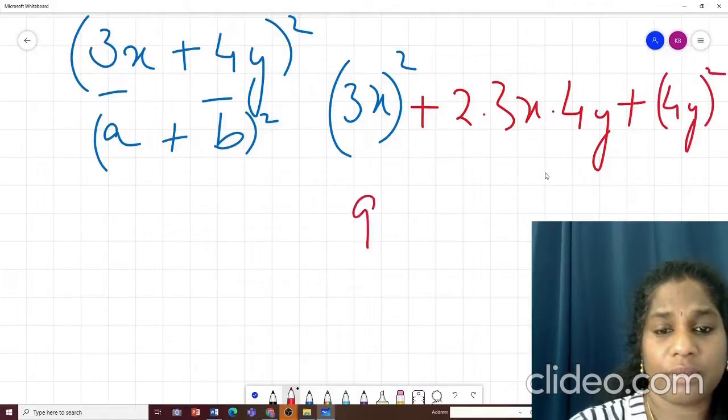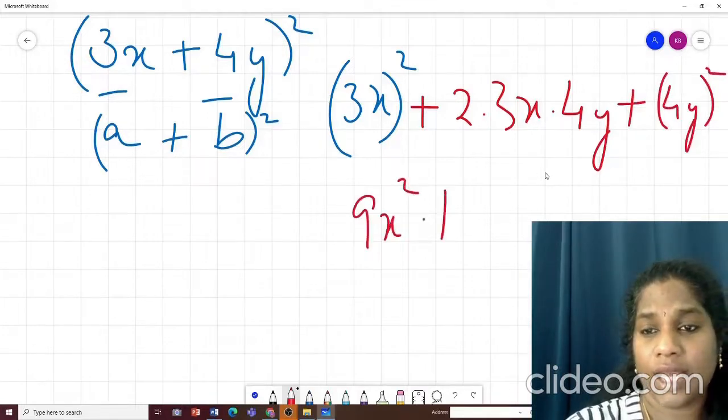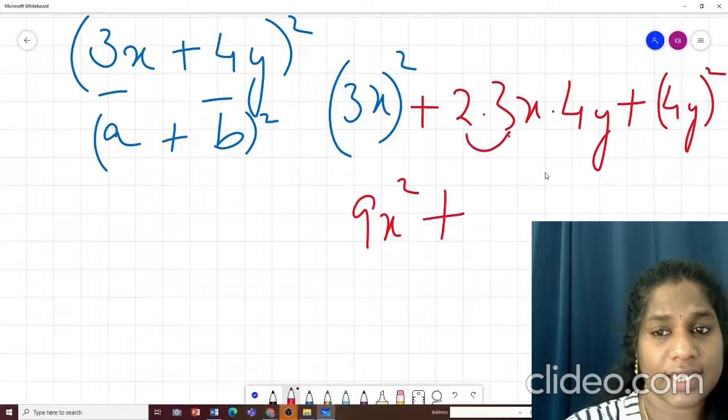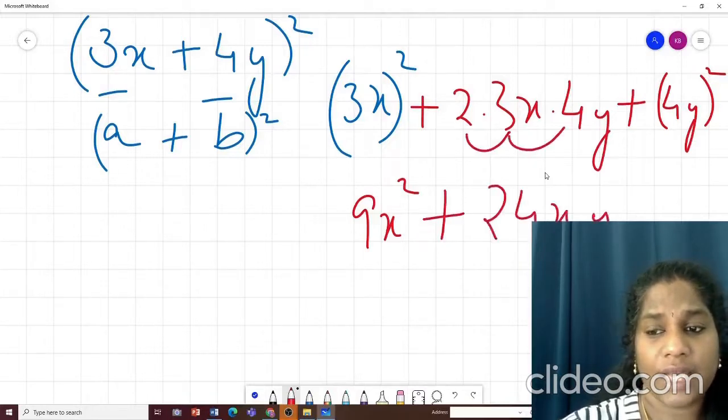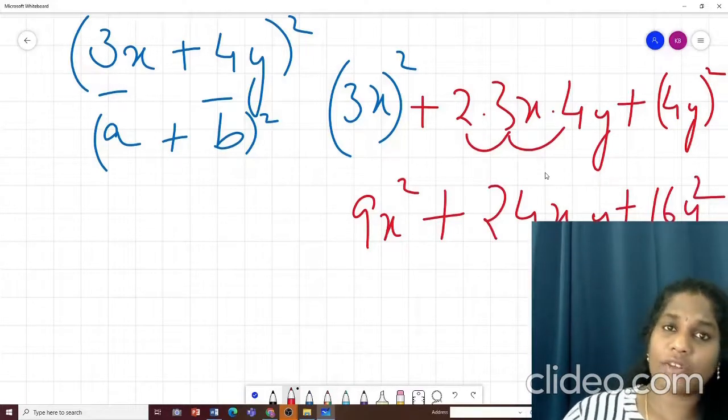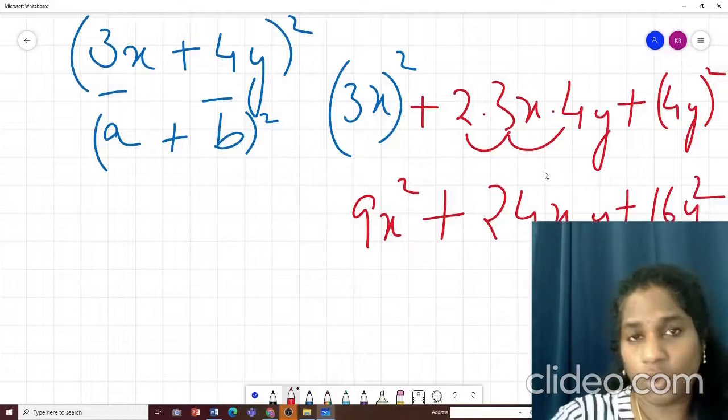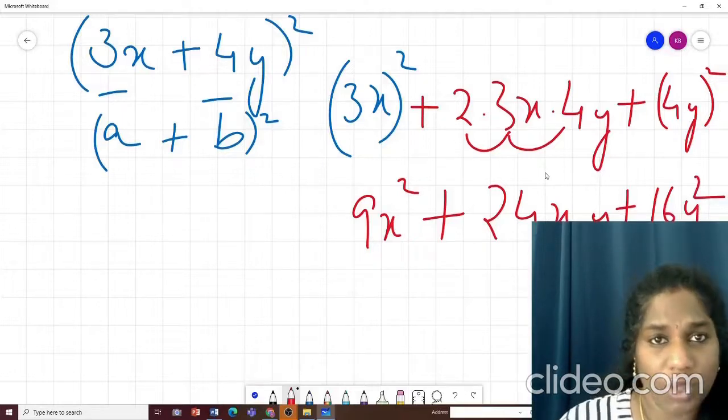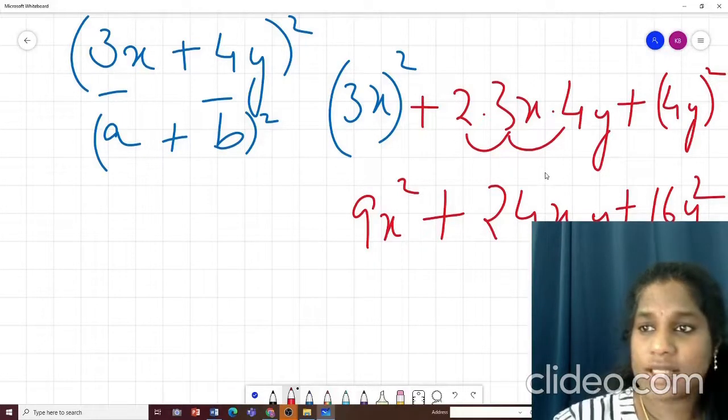So what does this become? 9x square plus 2 into 3 is 6, 6 into 4 is 24xy plus 16y square. Very simple. These are the simplest kind of questions that you will get. You will get more of these questions using a minus b also.